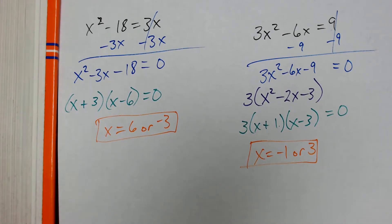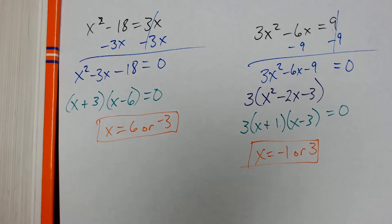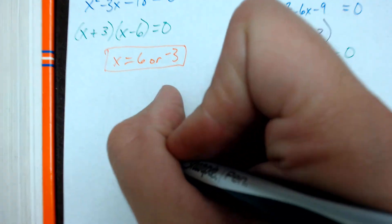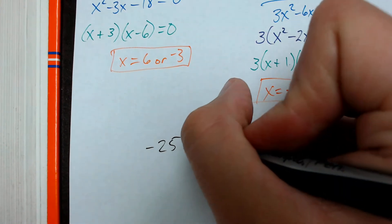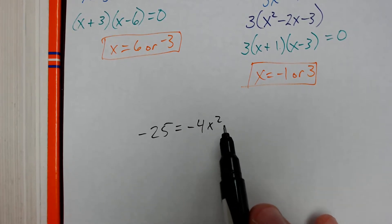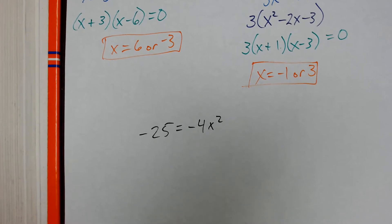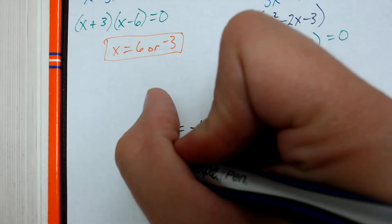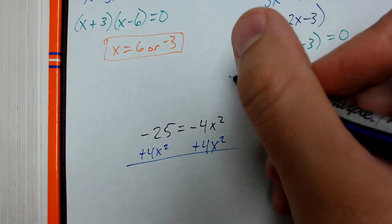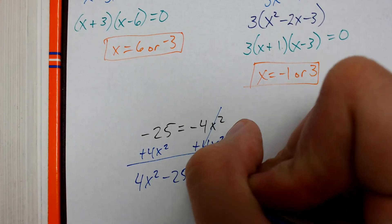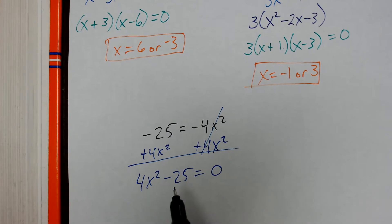The last example uses difference of squares. We have negative 25 equals negative 4x squared. I see the x squared term, which is the key thing to look for with quadratics. I set it equal to zero first by adding 4x squared to each side. That cancels on the right, and on the left I get 4x squared minus 25 equals zero. What we have here is a difference of perfect squares.